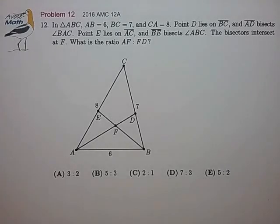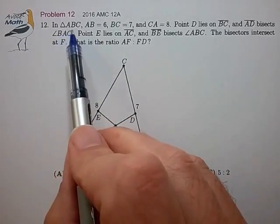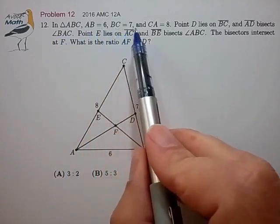Hi, this is problem 12 from the AMC 12a. In triangle ABC, AB is 6, BC is 7, CA is 8.